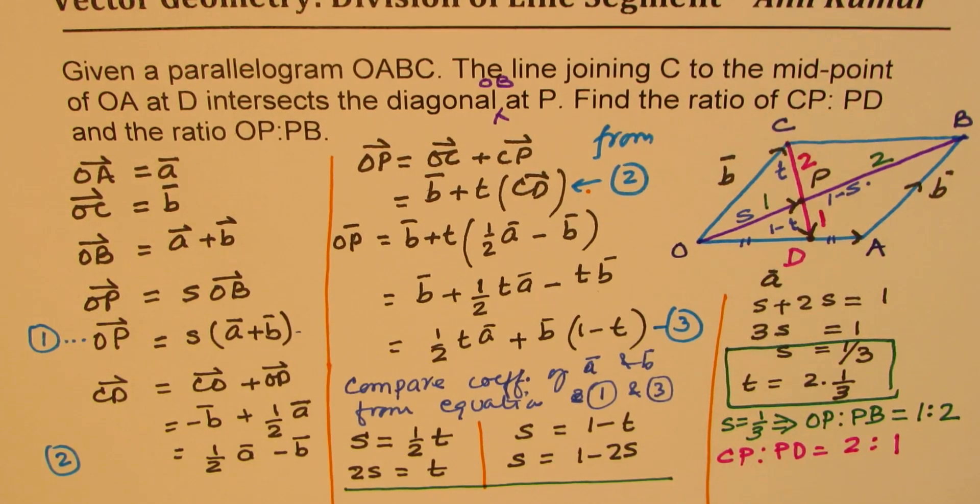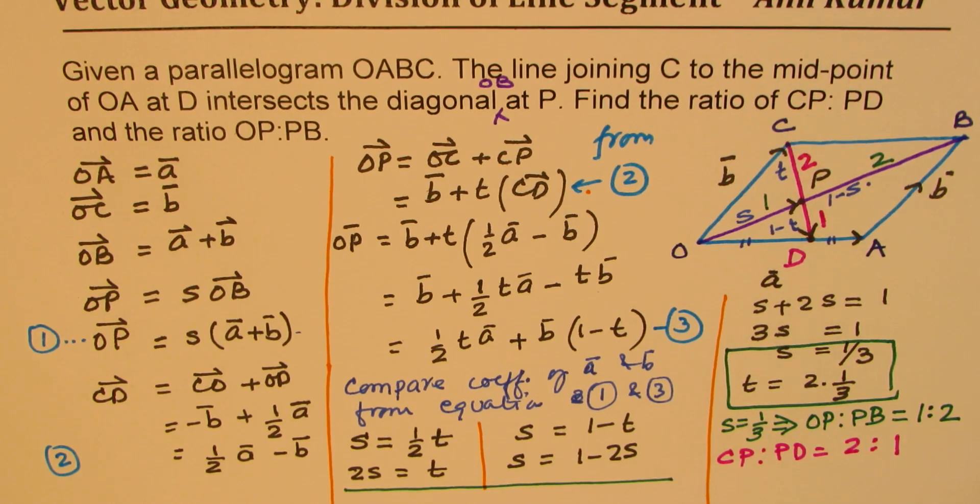So that is how we can get the ratios in which a line joining from a vertex to the opposite midpoint will divide the other diagonal. So that's a very important question from test point of view. I hope you understand and appreciate the steps here. And this comparison is the trick to get the solution.